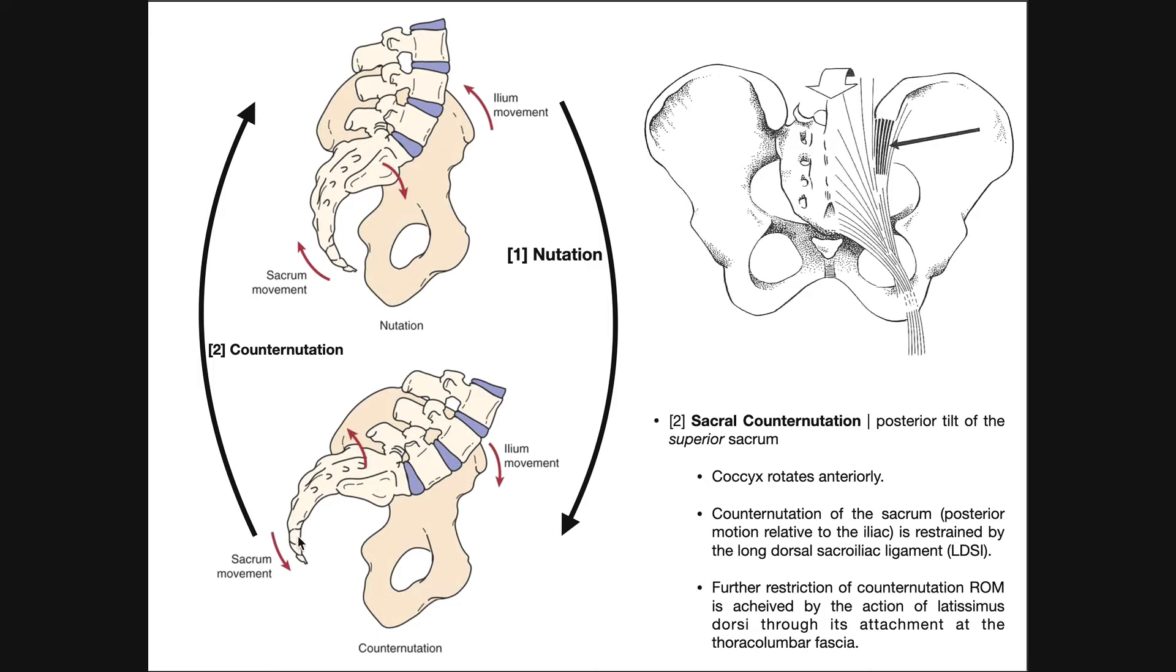So we have initially our coccyx and inferior sacrum, they're already rotated out posteriorly, so they need to rotate in the opposite direction, they need to rotate back anteriorly, you can see they've done that up here, and then the superior part of the sacrum would need to be rotated back posteriorly, you can see that's happened here. And so when you go from the nutated state back to the neutral state, that is counter-nutation.